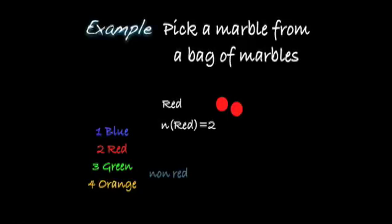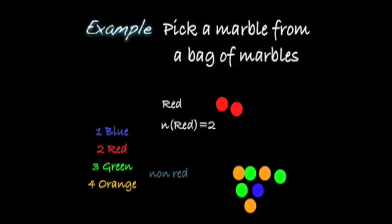Consider the experiment of picking a marble from a bag. The lower left corner is a summary of what's in the bag. There's one blue marble, two red marbles, three green marbles, and four orange marbles. If the event is picking a red marble, notice that there are two red marbles that are in the bag. The complement of red are all the marbles that are not red, or the non-red marbles. And there are eight non-red marbles in the bag. That must mean that there is ten marbles total. Let's check. One blue plus two red plus three green plus four orange equals ten. The number of red, which is two, the number of non-red, which is eight, when added together equals ten, the total number of marbles in our bag.